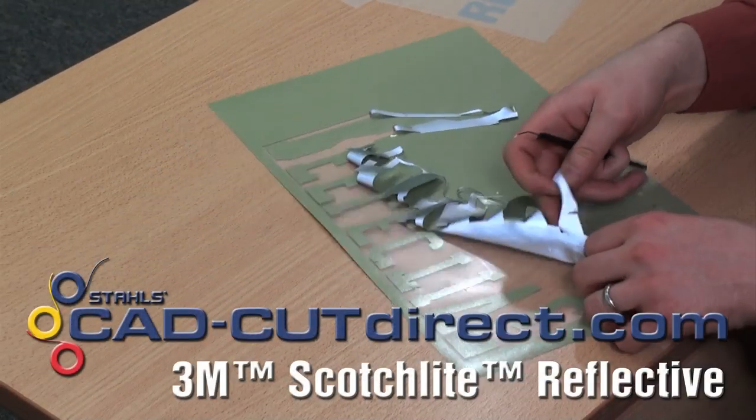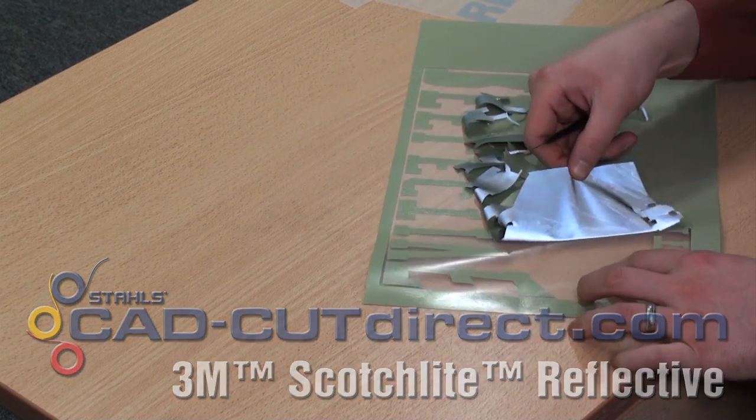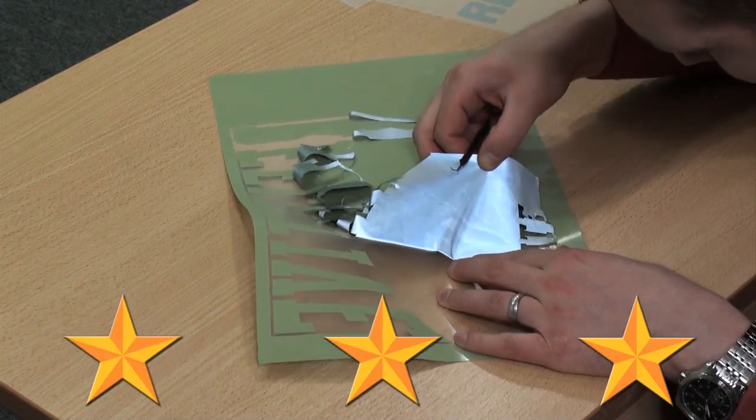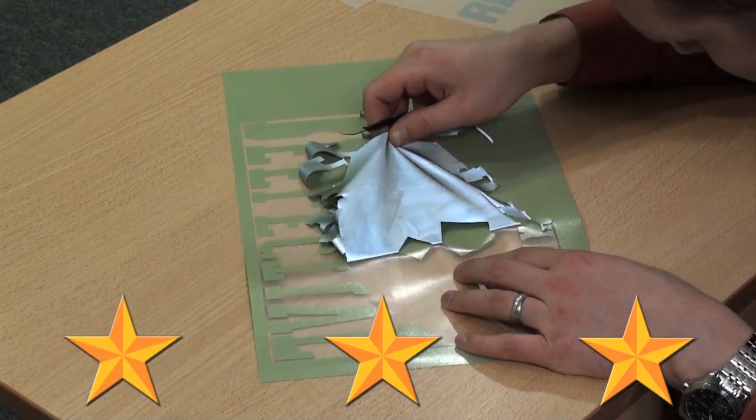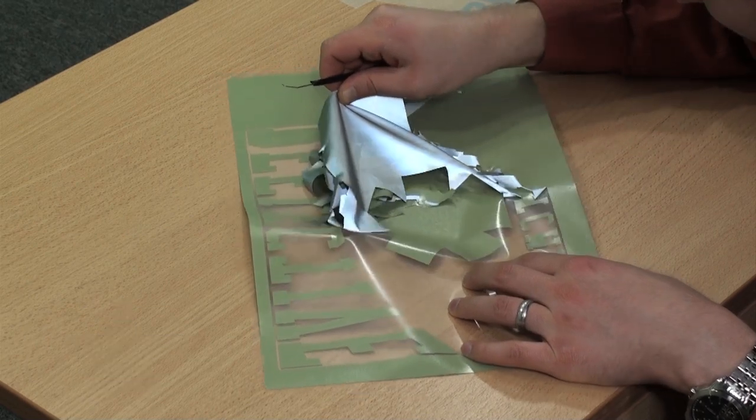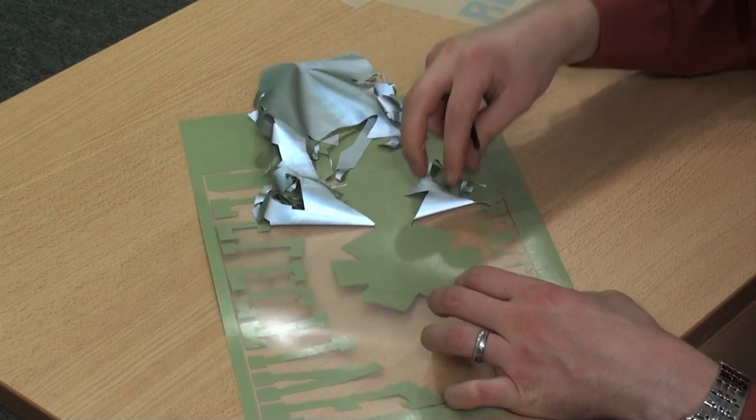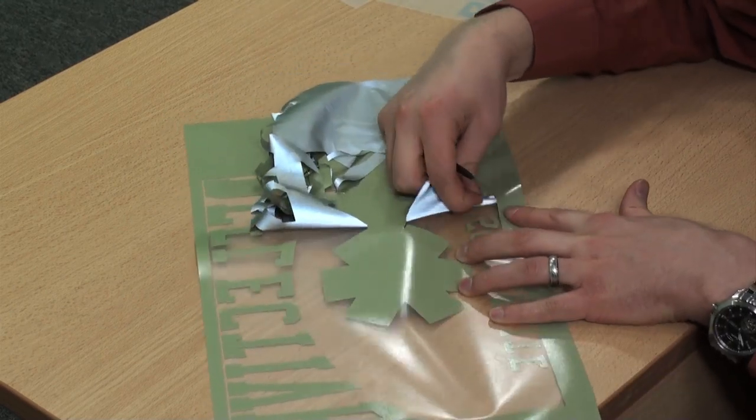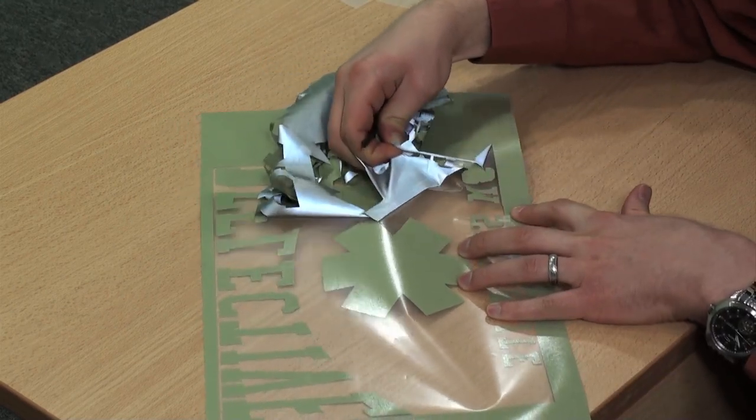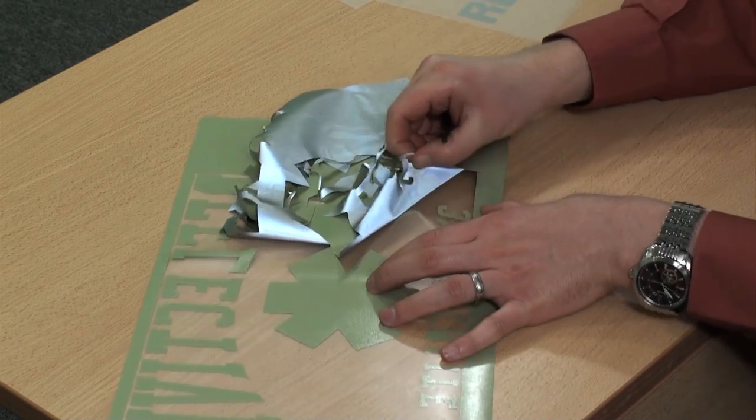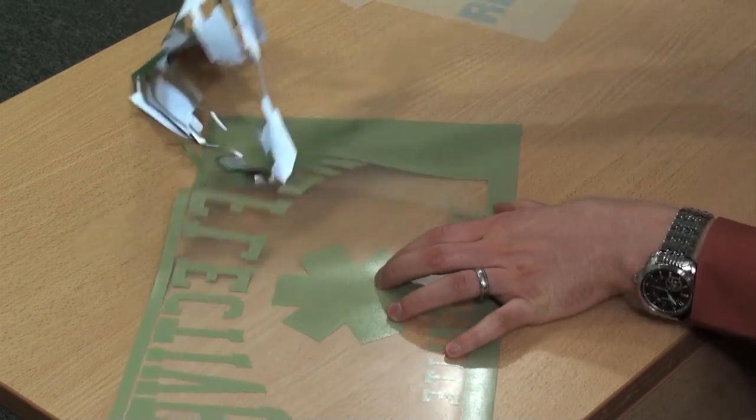And the last product that I'll weed is 3M Scotch Light. Weeding score, I would rank this 3 out of 5 stars. This one actually has a slight pressure sensitive mylar, which means it's slightly sticky, which makes it nice for if you accidentally peel up a letter, being able to position that back down.